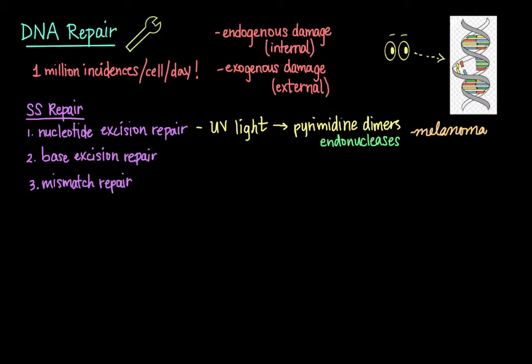If there is damage to a particular base, then base excision repair comes into play. Certain chemicals, like nitrates for example, can lead to deamination of a base within a strand of DNA. Deamination is simply the removal of an amino group.